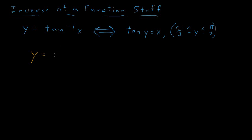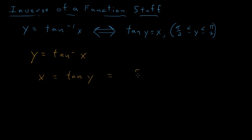Let's rewrite y equals the inverse tangent of x, and then rewrite that in its equivalent form: x equals tangent of y. We can get around taking the derivative of tangent directly by remembering that tangent of y is equal to sine of y over cosine of y, and we can take the derivative of that using the quotient rule.